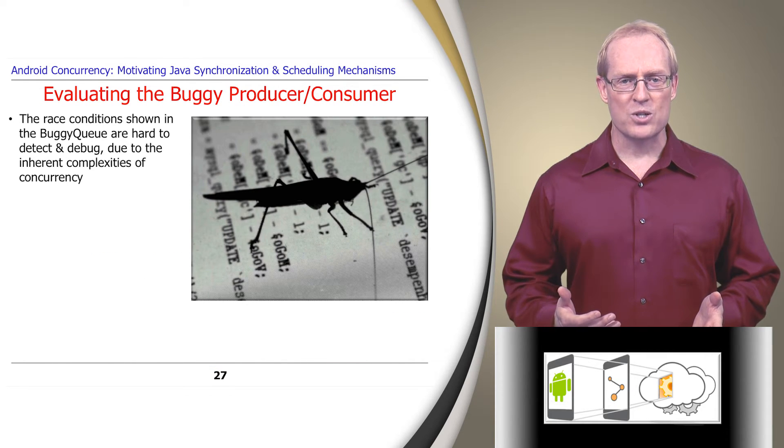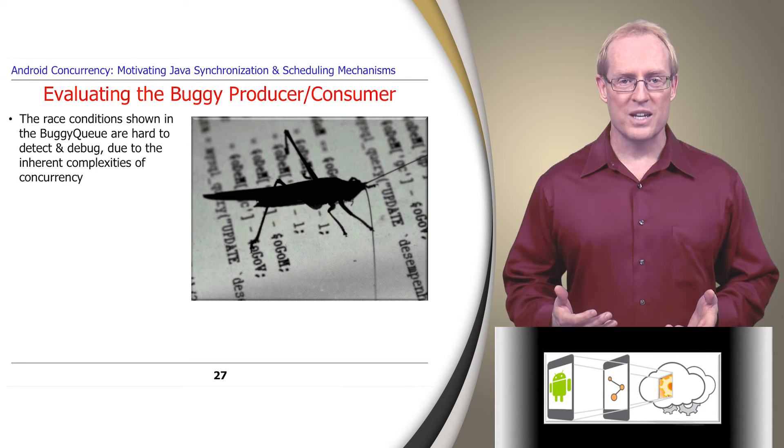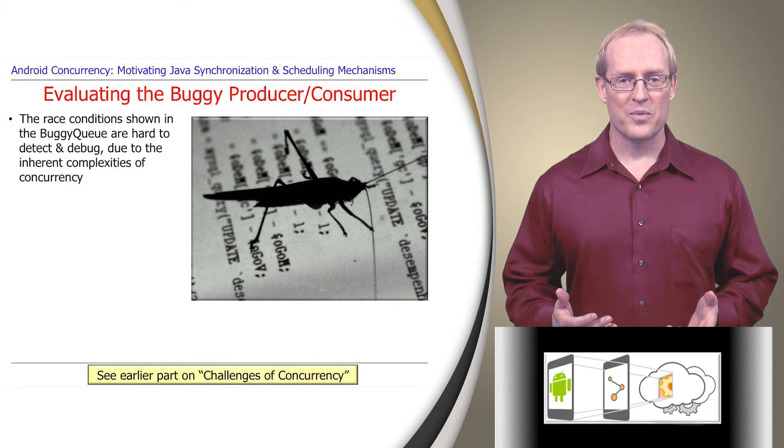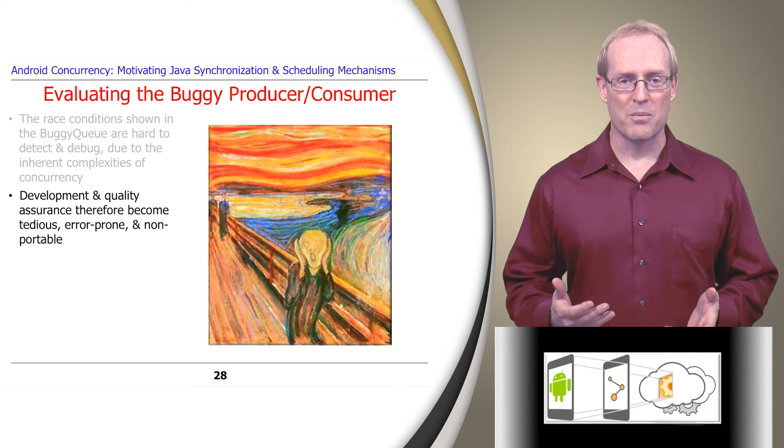These types of race conditions are hard to detect and debug due to the inherent complexities of concurrency discussed in this earlier video. For example, the behavior of this program will vary depending on factors like the number of cores or properties of the underlying operating system scheduler, which makes development and quality assurance processes tedious, error-prone, and non-portable.